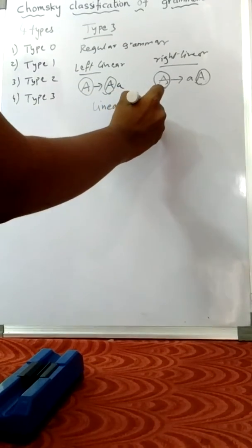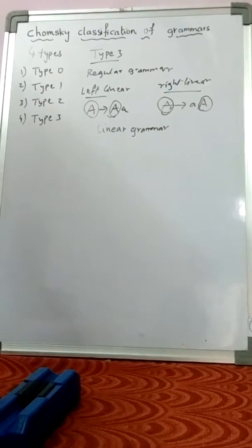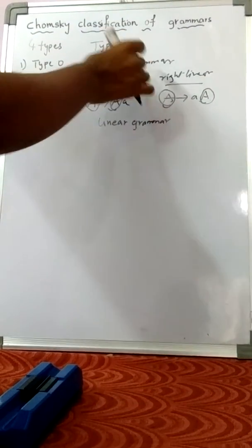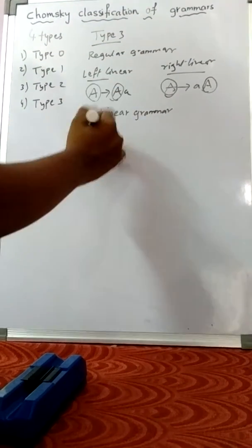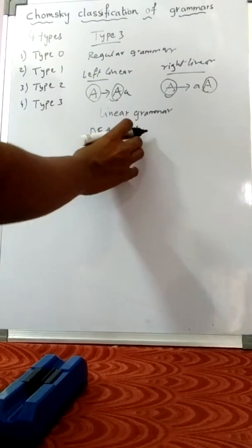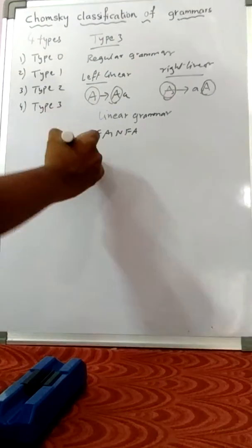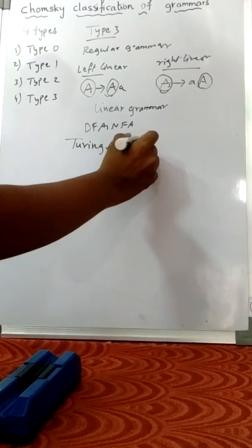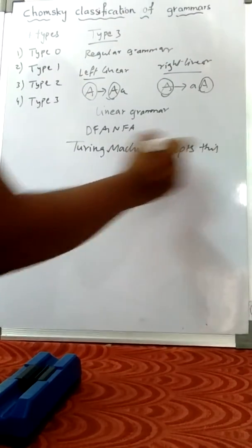The language generated by regular grammar is a regular language. DFA and NFA accept this type of language. The Turing machine also accepts Type 0 languages.